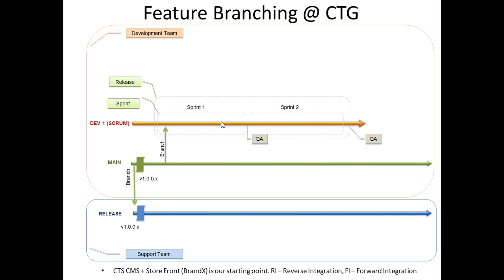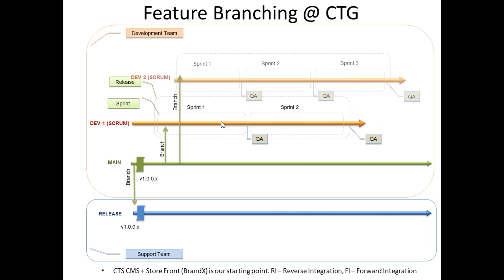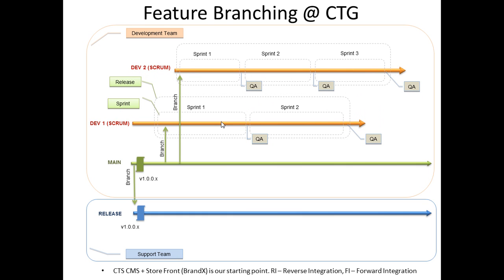Let's assume that while our first development team is progressing with development, the client has asked us to deliver another set of features in a separate release. Both of these releases are independent from each other. As a result, we will need two development teams working in parallel without affecting each other's work. In order to accommodate this requirement, we need to establish our second development branch with three sprints, as shown here. Now two teams can work independently from each other on two different branches.